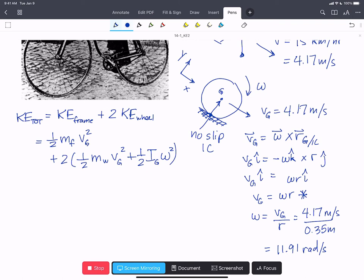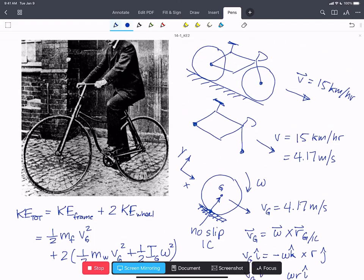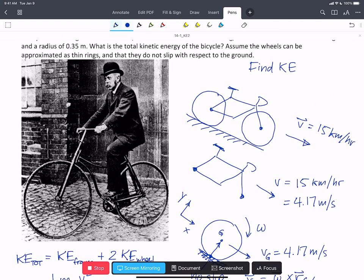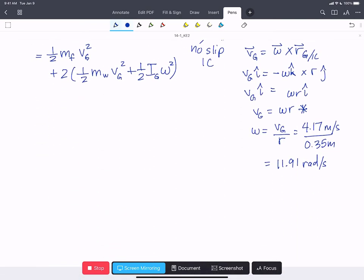So we need to know the mass moment of inertia of the wheel about the center of gravity. We're told to approximate the wheels as thin rings. If we look in our table for mass moment of inertia, we'll be able to find IG of the wheel is a thin ring. It's going to be mass of the wheel times the radius of the wheel squared.